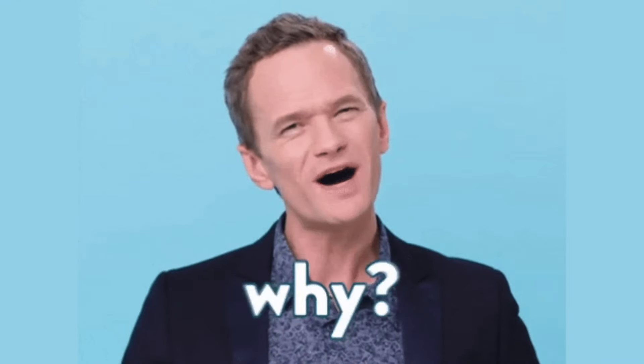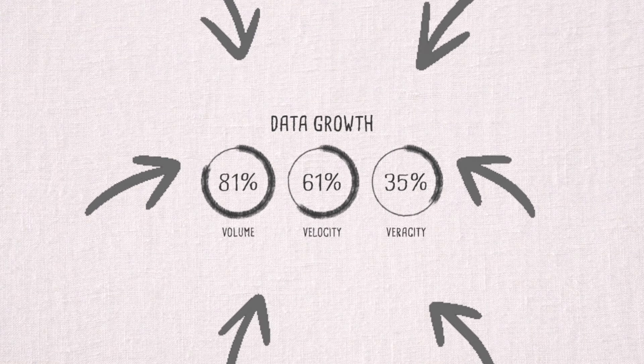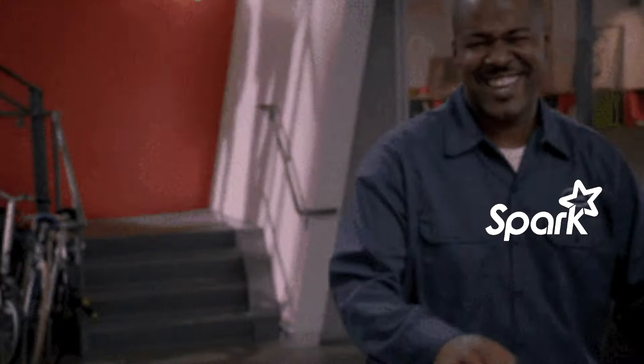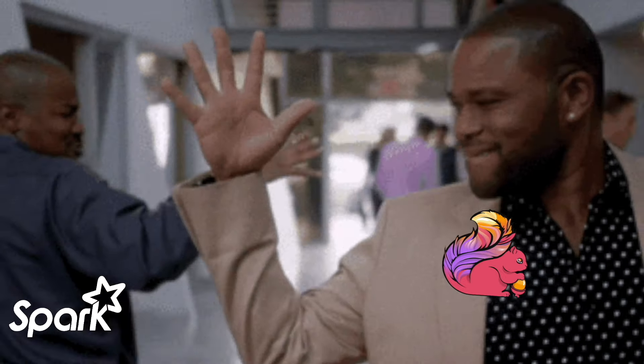Let's first talk about why Flink and Spark kind of exist. The obvious reason is that data has grown to such great volume, velocity, veracity — all of these big Vs — that we need to create frameworks and solutions that can actually handle and process these large data sets. In turn, Spark and Flink have both become very popular for that reason. They're able to manage and process large data sets very efficiently.